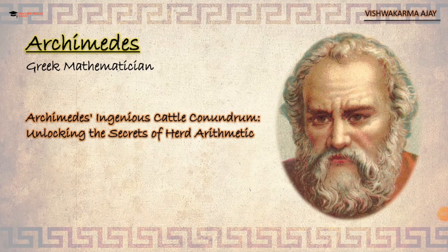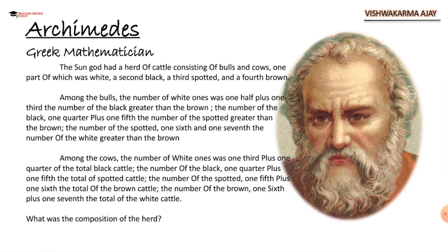Hello and welcome back to Maths Made Easy. Today we are going to solve an interesting brain teaser by the great Greek mathematician Archimedes. The Sun God had a herd of cattle consisting of bulls and cows — two main categories, one part of which was white, second part black, third spotted, and the fourth one brown.